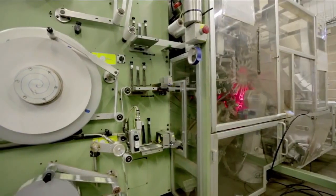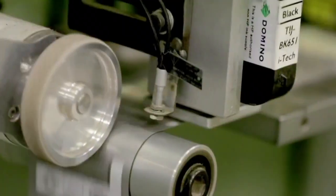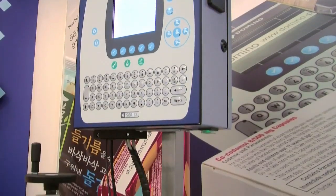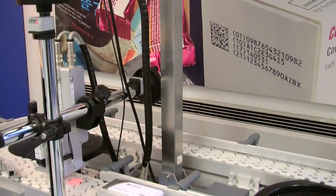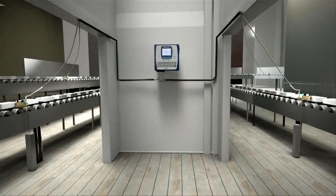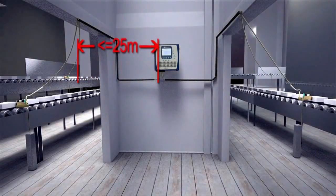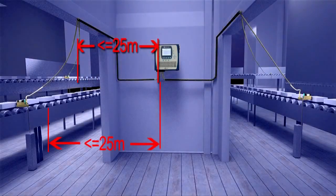Domino is a multi-technology company, so we have products that allow us to code from the primary coding side when the product is first manufactured, to the secondary coding and tertiary coding—whether that be printing onto secondary boxes or printing onto pallets using our print-and-apply system.